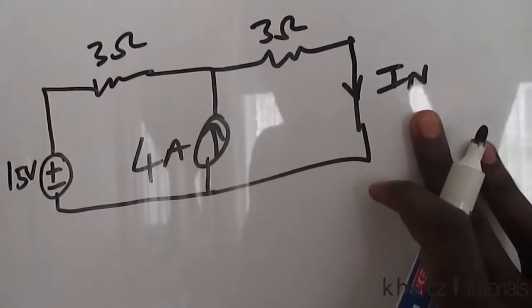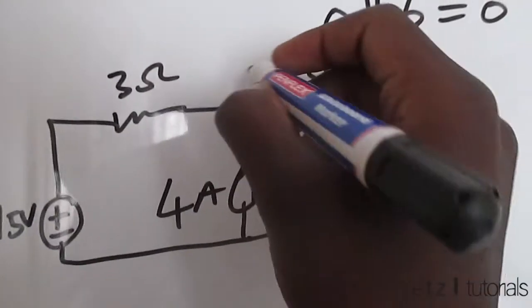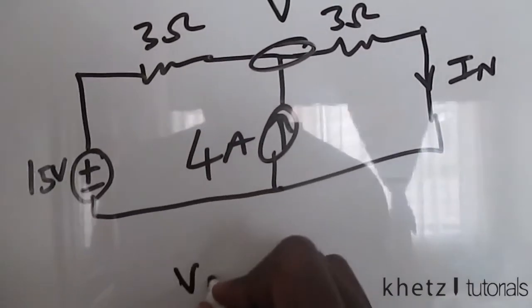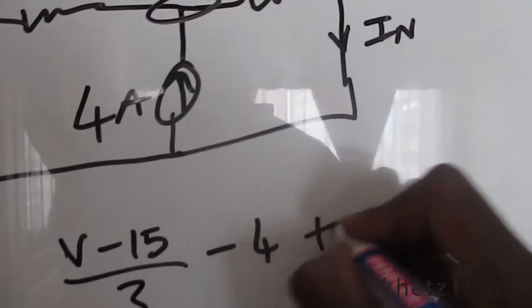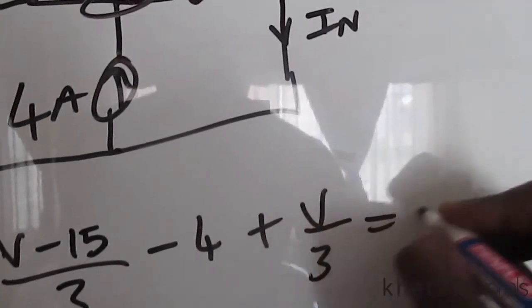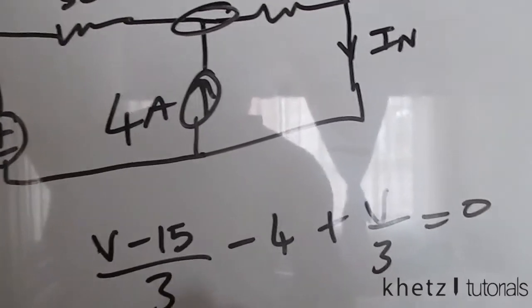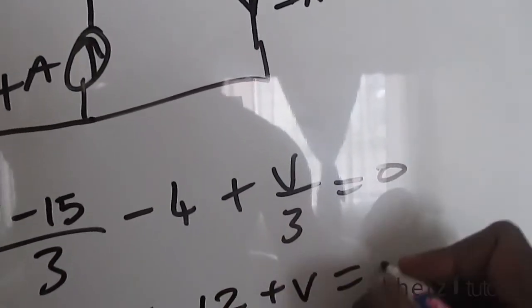Now to find IN you can use supermesh analysis which is probably going to be longer, or you can use a nodal analysis. Call that V and then say V subtract 15 divided by 3, negative 4 plus V divided by 3 is equal to 0. Multiplying through by 3, we have V subtract 15 subtract 12 plus V is equal to 0.